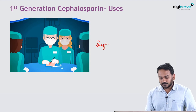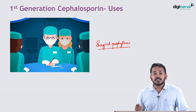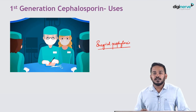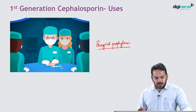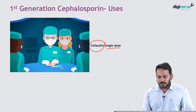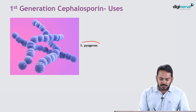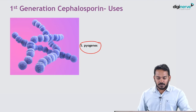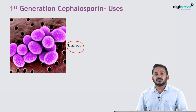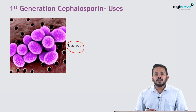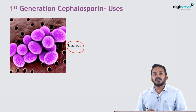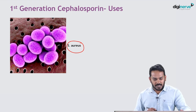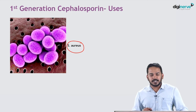First generation cephalosporins are also used for surgical prophylaxis. During surgeries, an incision is made and there is a chance the wound will get infected. To prevent wound infection, cefazolin is used as a single dose, because the common organisms producing surgical infections — Streptococcus pyogenes and Staphylococcus aureus — are both killed by it. This is the most common clinical use of first generation cephalosporins.